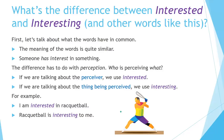If we're talking about the perceiver, we use 'interested.' If we're talking about the thing or object being perceived, we use 'interesting.' For example: I am interested in racquetball. Racquetball is interesting to me.